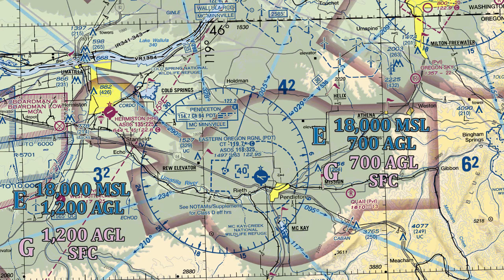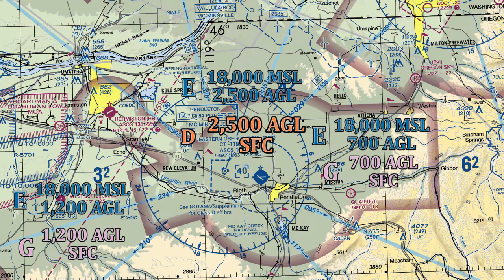Echo goes up to 18,000 feet MSL outside the magenta line. Where our Class Delta airspace is around the airport, that delta airspace goes surface to 2,500 feet AGL, and then Echo airspace starts at 2,500 feet AGL and goes up to 18,000 feet MSL. Class Echo airspace starts above all the airspaces we're talking about — above the Gs and above the delta airspace.